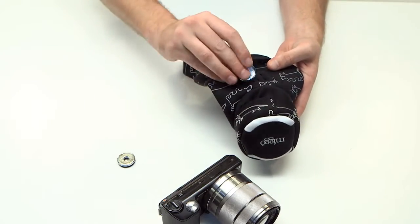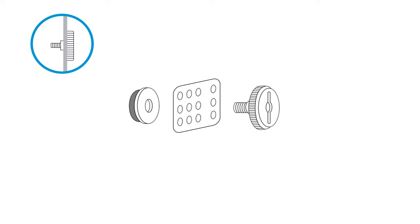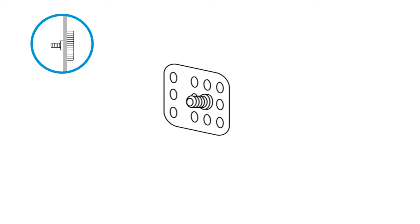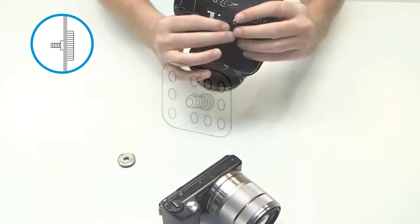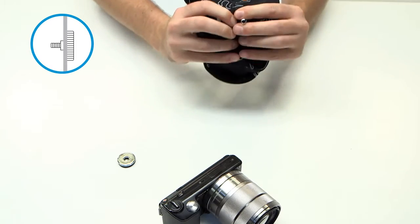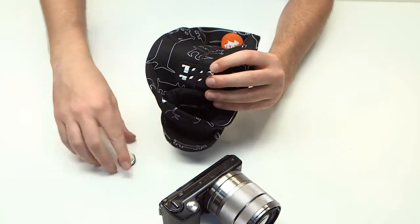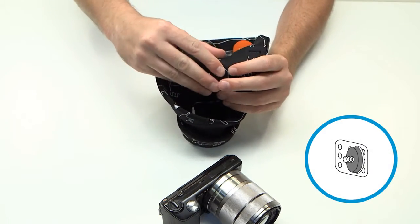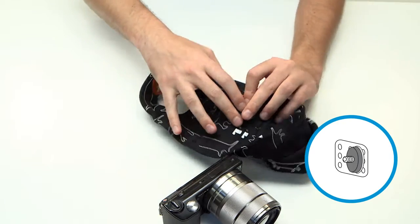Slide the screw into the chosen eyelet. Make sure the entire thread of the screw goes through. Thread the nut onto the screw with the rubber ring directed toward the camera till full contact of the screw's two parts.